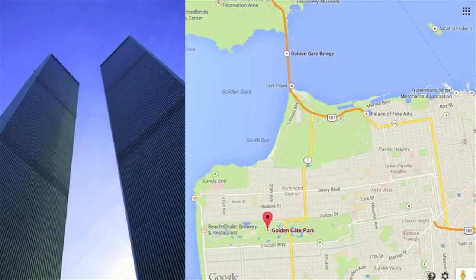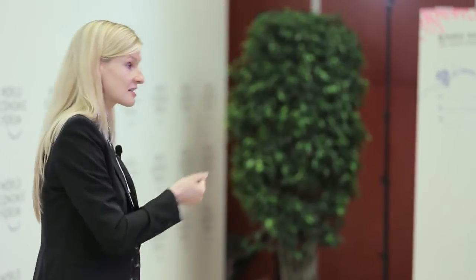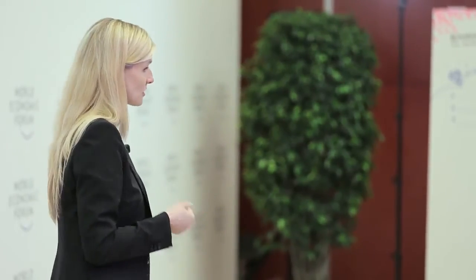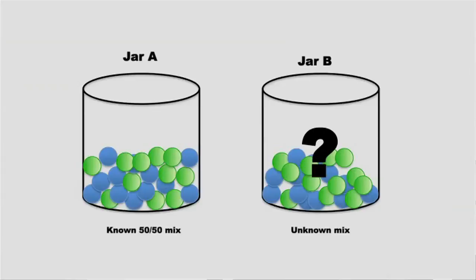Now on the supply side: terrorism risk. Before 9/11, terrorism wasn't included or excluded from policies. Then suddenly after 9/11, coverage was only available at extremely high prices or not at all — for example, San Francisco's Golden Gate Park couldn't get terrorism coverage at any price. A reason for this is that even the supply side — insurers, re-insurers, and capital market investors — may be averse to ambiguity or uncertainty when the exact probabilities of events are not known.